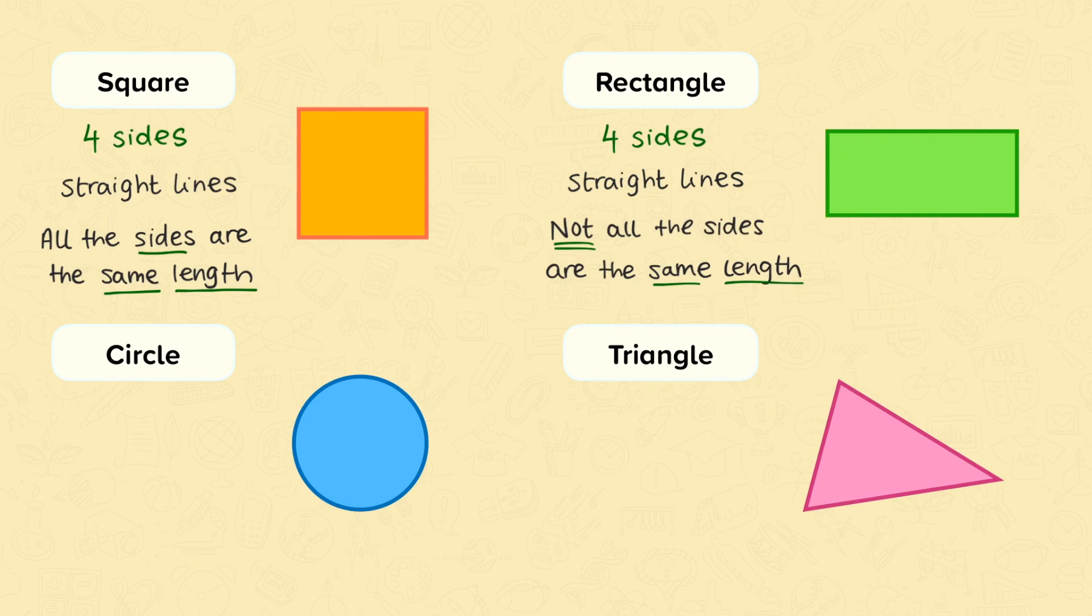For the circle, we only have one side, and that side is not a straight line. You can see here that the circle is round.